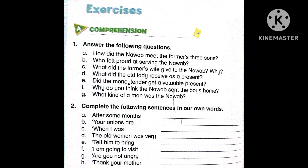The questions are: A. How did the Nawab meet the farmer's three sons? B. Who felt proud at serving the Nawab? C. What did the farmer's wife give to the Nawab and why? D. What did the old lady receive as a present? E. Did the moneylender get a valuable present? F. Why do you think the Nawab sent the boys home? G. What kind of a man was the Nawab?